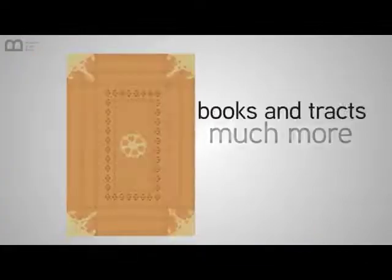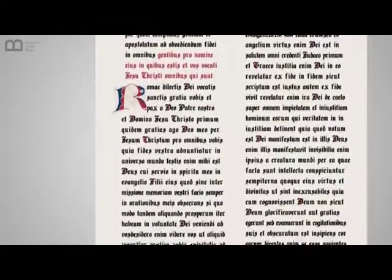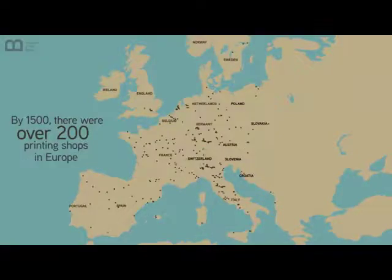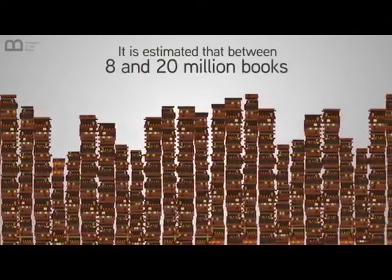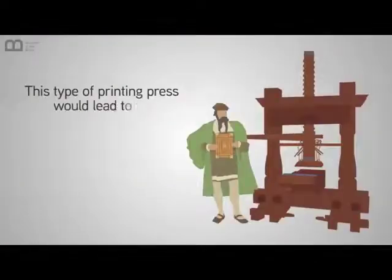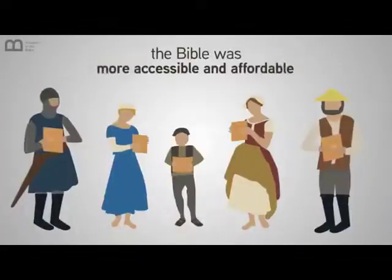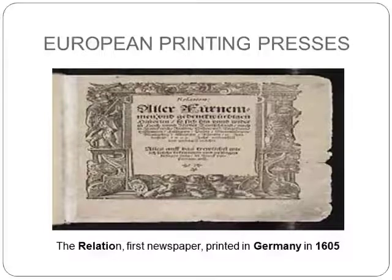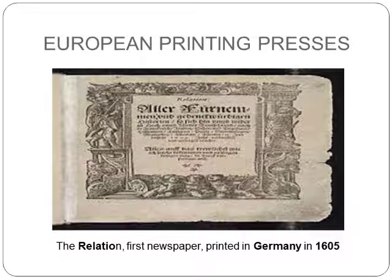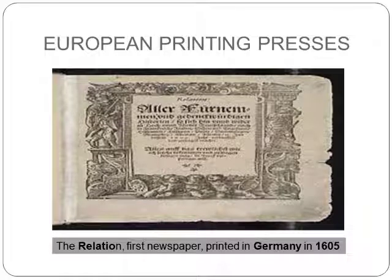It made books and tracts much more affordable. Gutenberg's first major project was printing the Bible in Latin. By 1500, there were over 200 printing shops in Europe. It is estimated that between 8 and 20 million books were printed during those first 50 years. This type of printing press led to the mass production of the Bible, making it more accessible and affordable than ever. After this invention, printing became cheaper and cheaper. About 150 years after Gutenberg set up his printing press, the first newspaper — the Relation — was printed in Germany in 1605. Here is a page from the Relation that you can see on this slide.